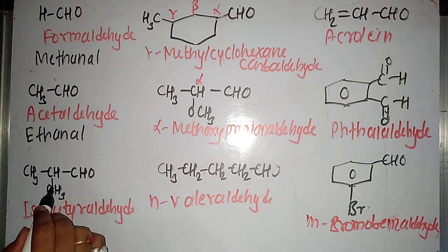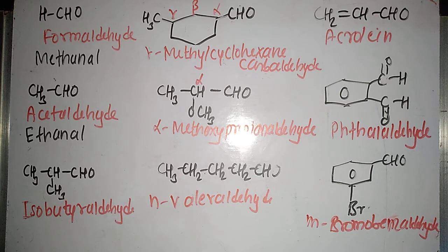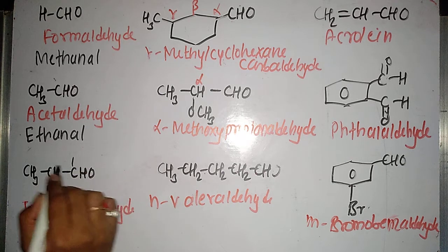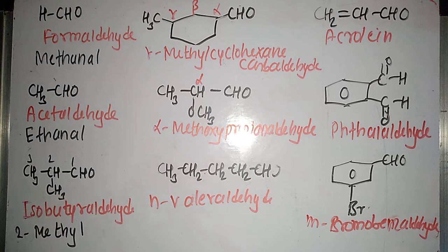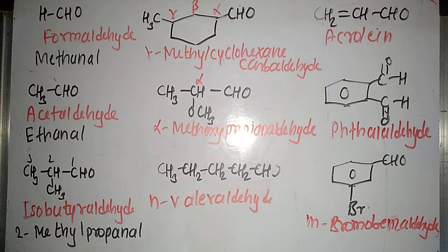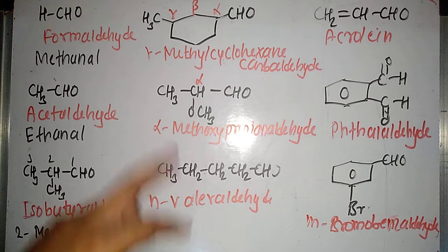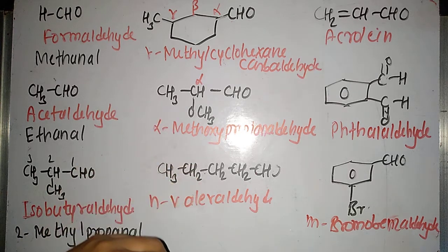In this case we have a substituent, so you select the longest chain and number it such that the carbonyl carbon of the aldehyde gets number 1 — this is carbon 1, this is 2, and this is 3. There is a methyl group at carbon 2. In the longest chain there are a total of 3 carbon atoms; the 3-carbon alkane is propane. Replacing 'e' with 'al', the name becomes 2-methylpropanal.